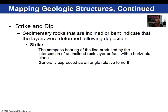I mentioned strike and dip in the previous video — let's go into a little bit more detail. Oftentimes it's difficult for students to grasp this concept. Sedimentary rocks that are inclined or bent indicate deformation after deposition. We can then measure the strike — that is the compass bearing of the line produced by the intersection of the inclined rock layer or fault with the horizontal plane. We report it as north so many degrees east or north so many degrees west. We use a device called a Brunton compass to measure the strikes and dips of rock layers.